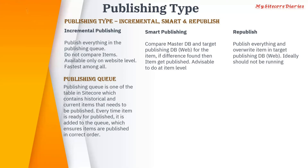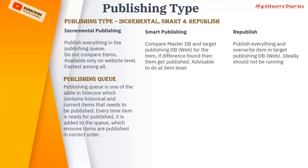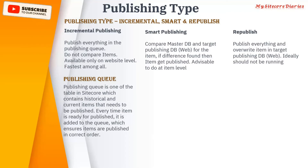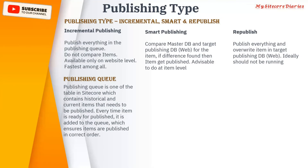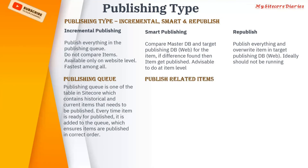Incremental publish publishes everything in the publishing queue but does not compare items the way smart publish does. It is available only at the website level — you do not have an incremental publish option at the item level. It is the fastest among all publishing types.